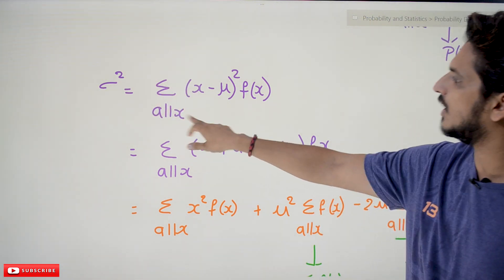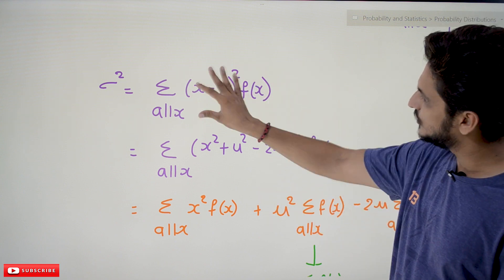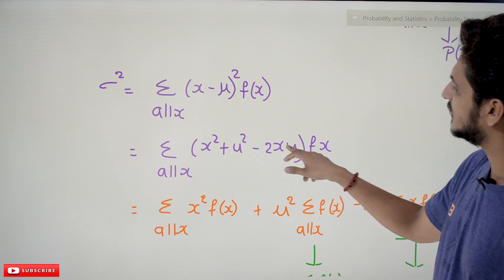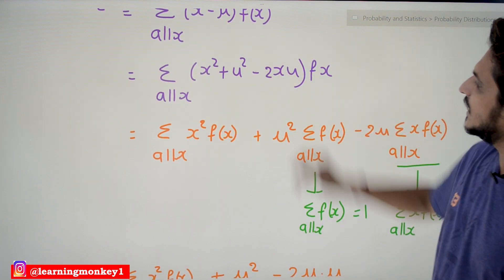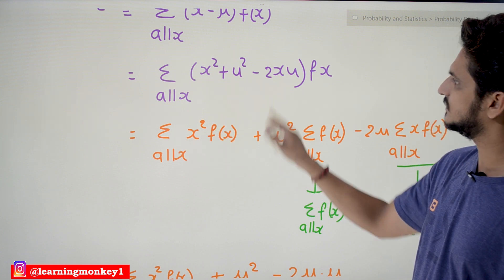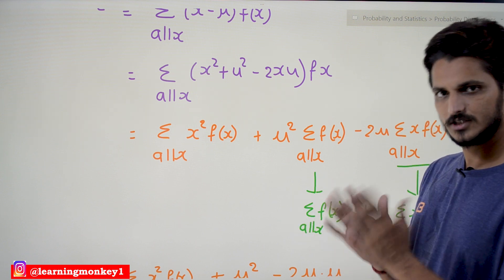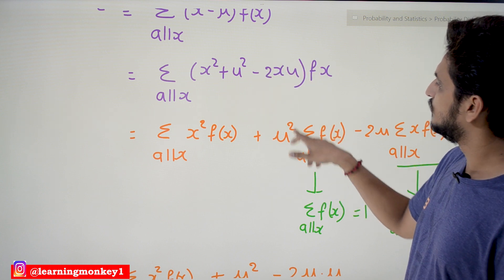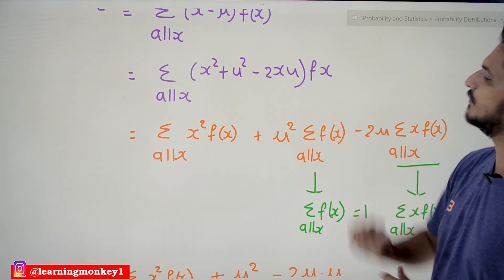Now, coming to the variance: to find the variance, sigma squared equals the sum over all X of (X minus mu) squared times F(X). If we expand this equation: sigma squared equals the sum over all X of (X squared + mu squared minus 2X·mu) times F(X). This can be written as: sum over all X of X squared·F(X), plus mu squared times sum over all X of F(X) — mu squared is a constant because the mean is constant — minus 2·mu times sum over all X of X·F(X).